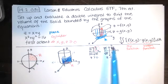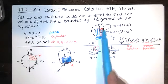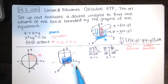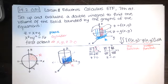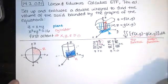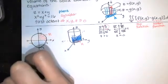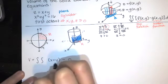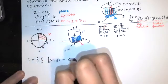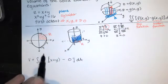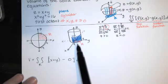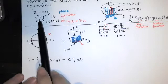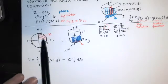To set up the integral we need to identify the top function and the bottom function. Z is starting in the xy plane, so the bottom function is zero, and z goes up to the plane z equals x plus y, which is the top function. We then integrate over region R, which is the projection onto the xy plane — inside the cylinder and in the first octant.